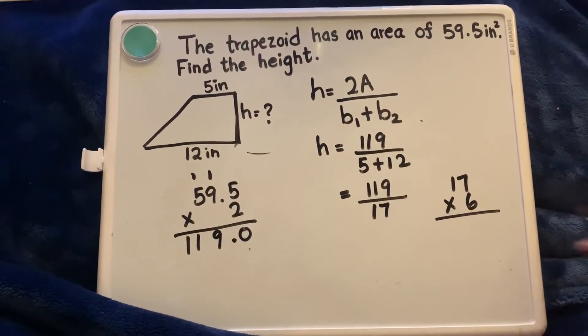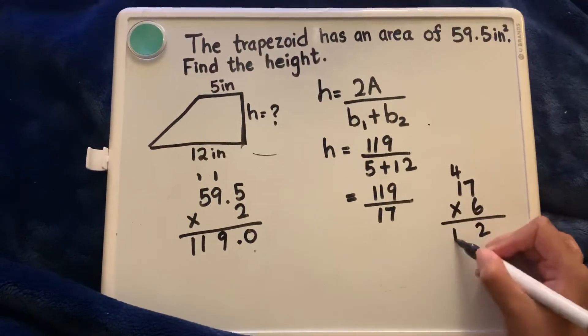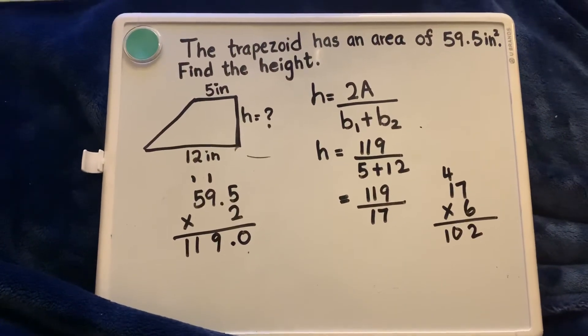6 times 7 is 42, so that's 102. Close but not close enough, right?